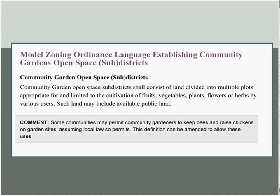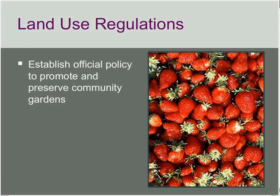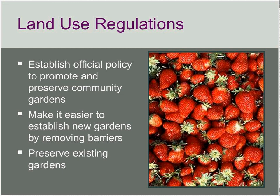This is modeled on something that Boston, Massachusetts has. To sum up: land use regulations help establish official policy to promote and preserve community gardens. They make it easier to establish new gardens by removing barriers such as special permission applications and costly fees, and they preserve existing gardens by giving them the same rights to exist as other forms of open space.